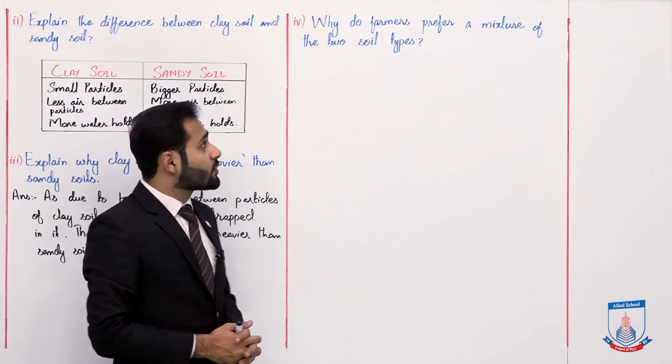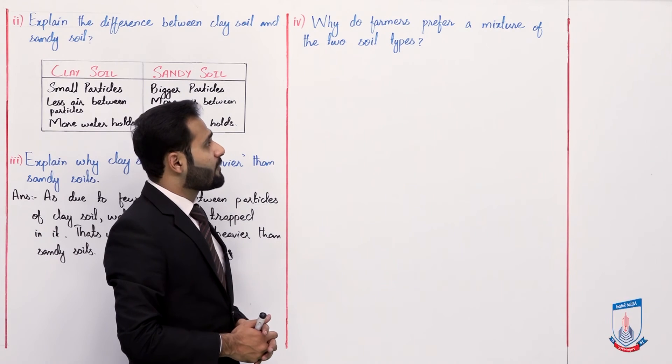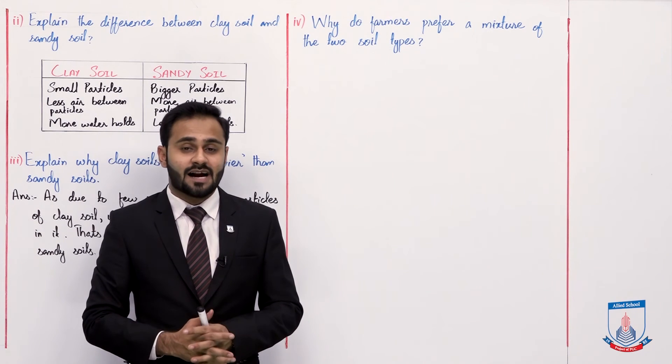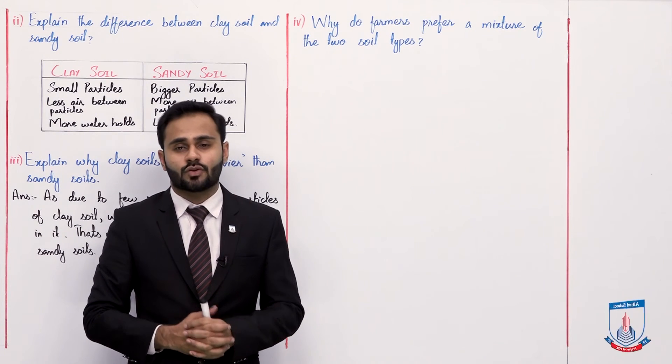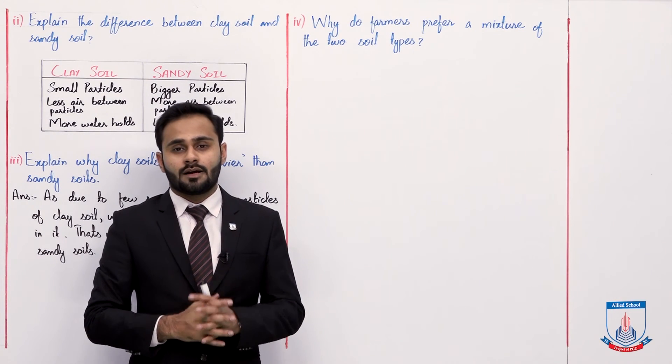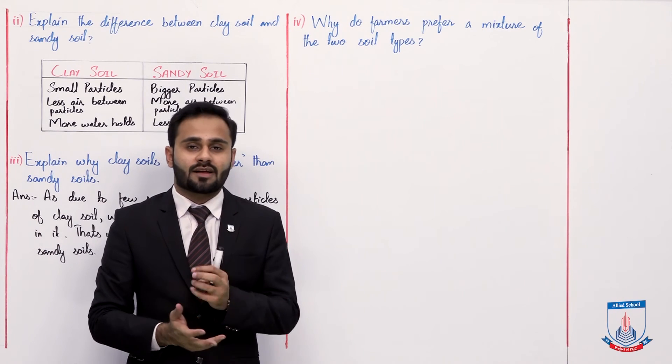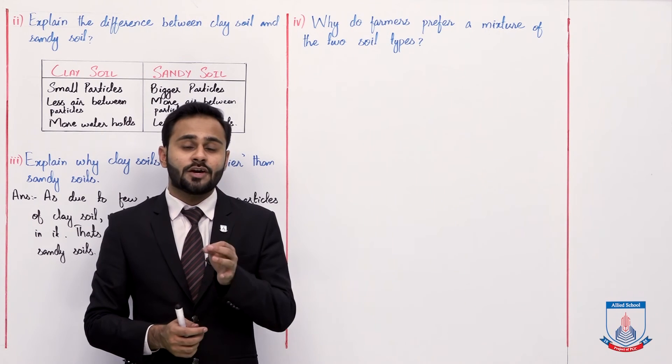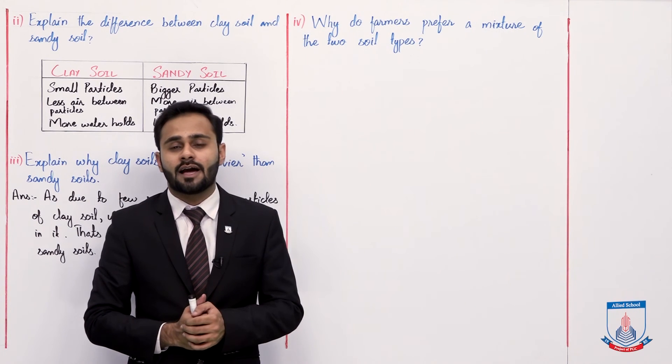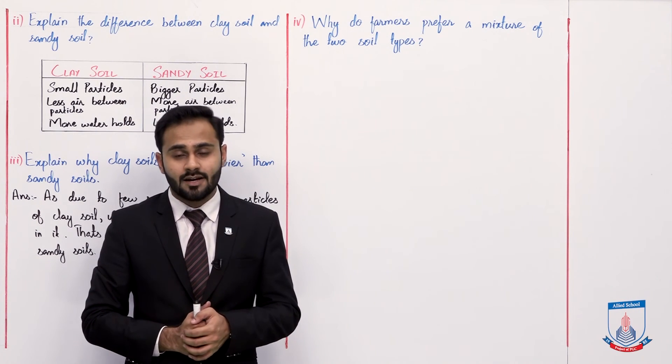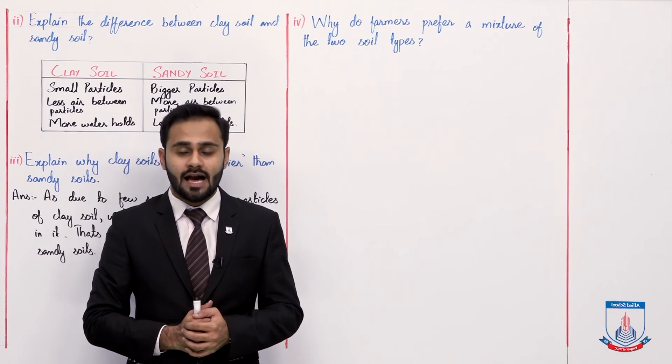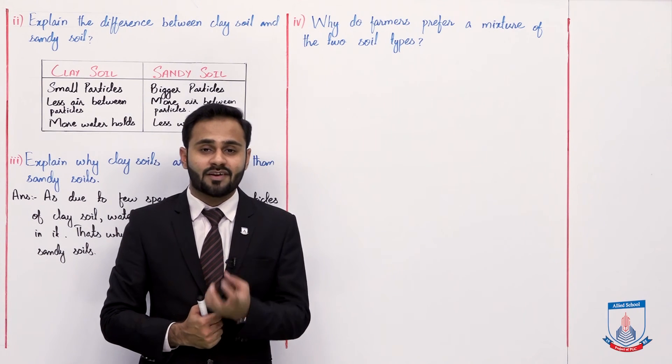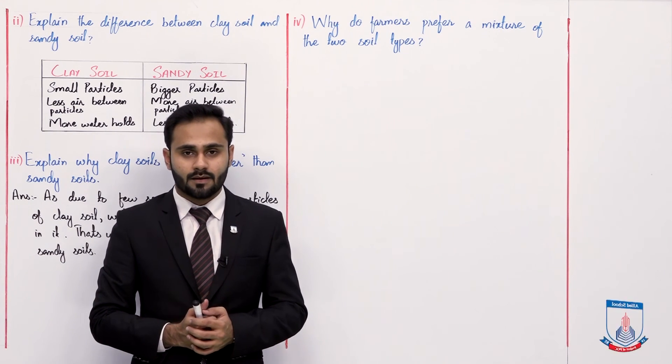The fourth question: why do farmers prefer a mixture of two soil types? Two soil types, that is clay soil and sandy soil. So farmers why do they prefer their mixture? Just because they have a mixture in it which is a very good fertilizer which is helpful for plants. That's why farmers prefer that we use the mixture.